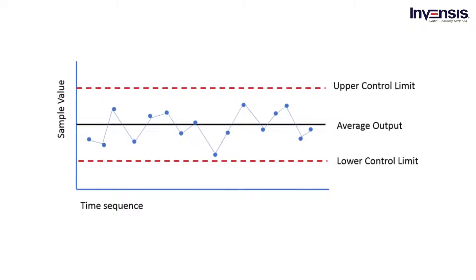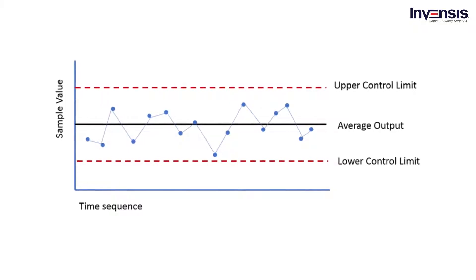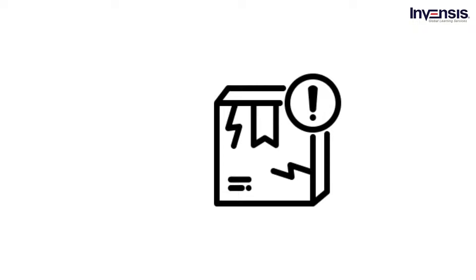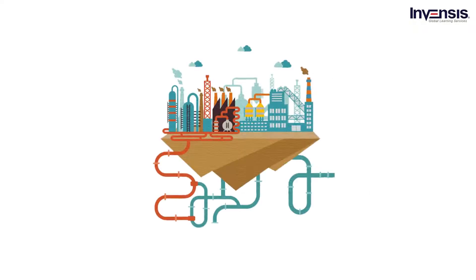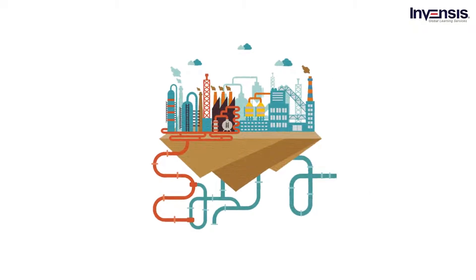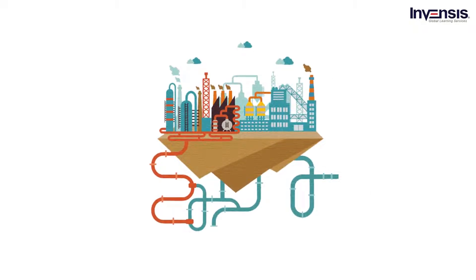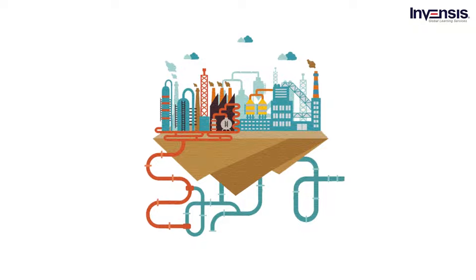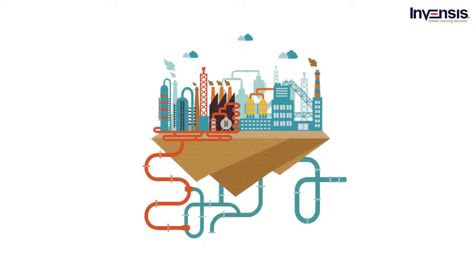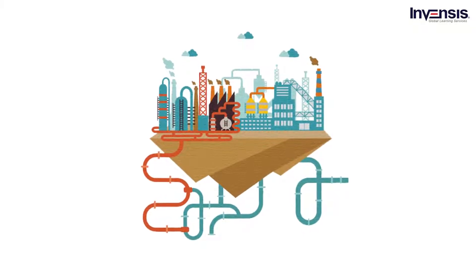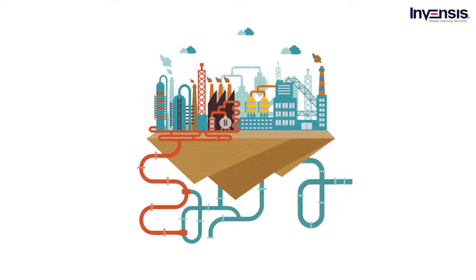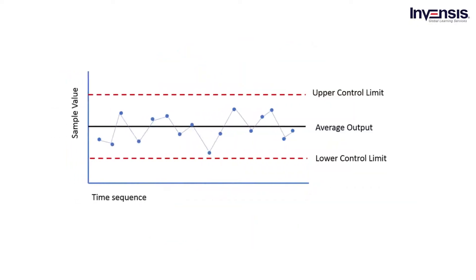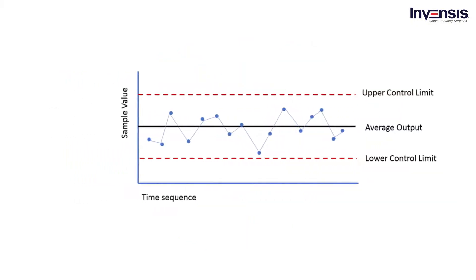Control charts are used to identify the causes of process variation and prevent manufacturing defective products. When we consider the manufacturing industry, variation can be due to several reasons, such as material properties and improper testing techniques. Let us learn more about control charts in the coming sections.